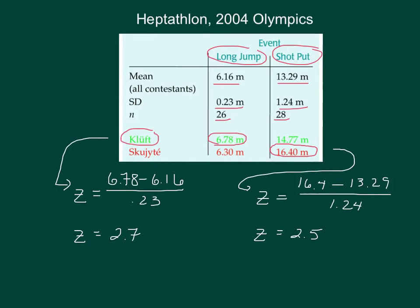We have their z-scores, and that actually tells us which athlete did better with respect to the rest of the athletes in those events. You can see that Kluft did better overall in the long jump than Skoyete did in the shot put. It's those values that get factored into calculating the points that these athletes earn in the different events that eventually determine who won the heptathlon.